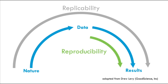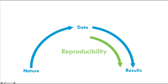Reproducibility only looks at the second half of that arc — you start with the same raw data and try to reach the same results. With the advent of high-throughput biology and machine learning, the number of data points and the complexity of algorithms have exploded. The methods section of journal articles just aren't suitable to capture this complexity. Data processing is rarely described well enough to allow for exact reproduction, and poor documentation can obscure errors in data processing.